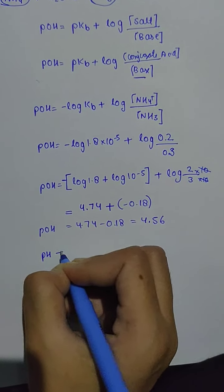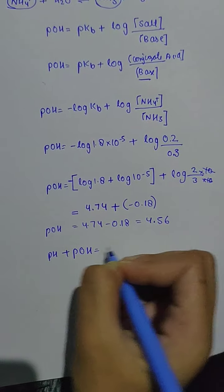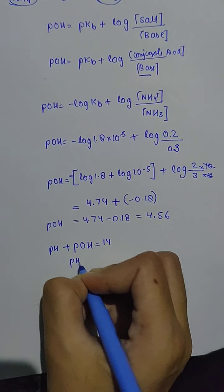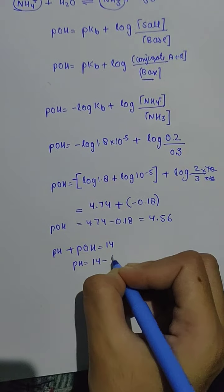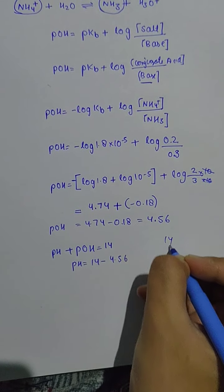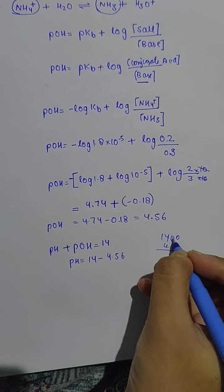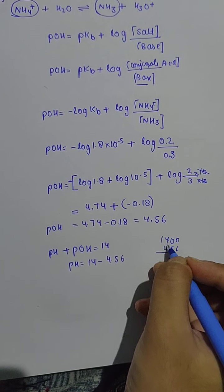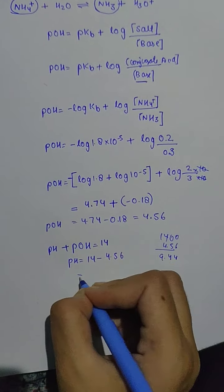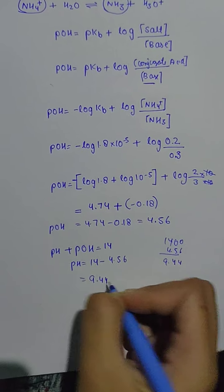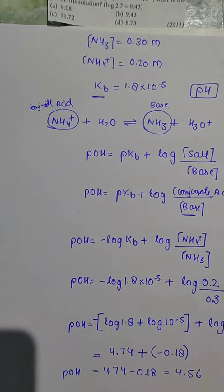We know that pH plus pOH at 25 degrees centigrade is 14. So pH equals 14 minus pOH, which is 14 minus 4.56, giving us pH of 9.44, which is given in option B.